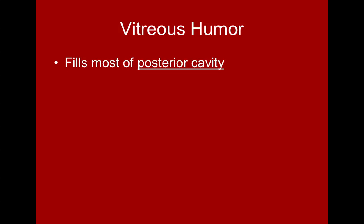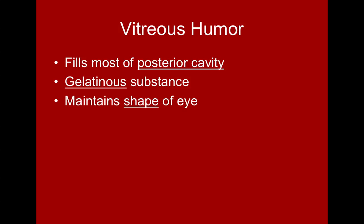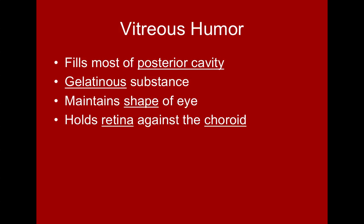In the posterior cavity or chamber, the vitreous humor is a more gelatinous fluid that fills most of the posterior cavity. It maintains the shape of the back of the eye and holds the retina against the choroid. The retina and choroid are not attached to each other, so if the vitreous humor doesn't push the retina against the choroid's capillary network, the result is a detached retina — where that part of the retina can die and we lose some sight.